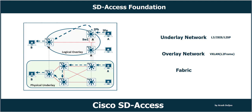You will learn about the underlay in more detail — for example, in underlay network implementation we have two options: manual underlay configuration, or LAN Automation, a feature of Cisco SD Access. About the overlay network, there are many details and configurations to learn. At the end of this video, we have gained knowledge about Cisco SD Access — we know about underlay, overlay, and fabric.